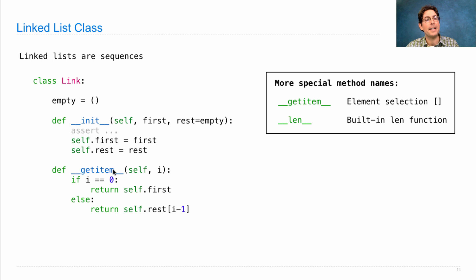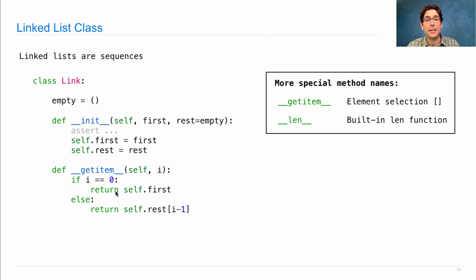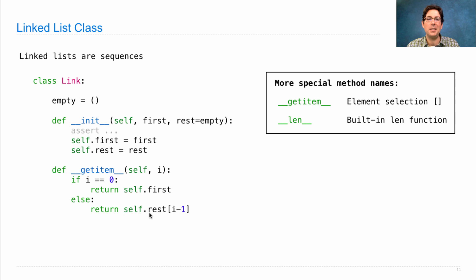If __getitem__ ever gets invoked, we know that the linked list is not empty. If someone tried to look up an item in the empty list, they would just be looking it up in the empty tuple and get an error. So we know there's at least one element. The question is, is that the element the user is asking for? The index i tells us. If they want the zeroth element, that's self.first, so we just return it. Otherwise, we let rest take care of the hard work — element i minus 1 in the rest of the list is the same as element i in the whole list.